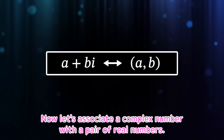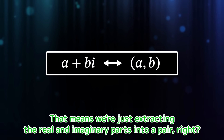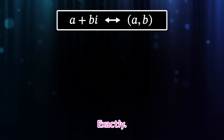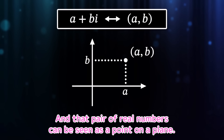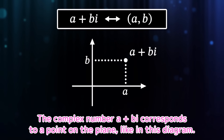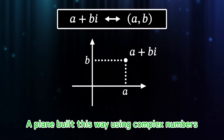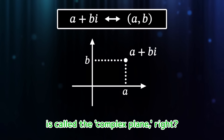Now let's associate a complex number with a pair of real numbers, so A plus BI corresponds to the pair (A, B). That means we're just extracting the real and imaginary parts into a pair. And that pair of real numbers can be seen as a point on a plane. In other words, the complex number A plus BI corresponds to a point on the plane, like in this diagram. I remember now — a plane built this way using complex numbers is called the complex plane.